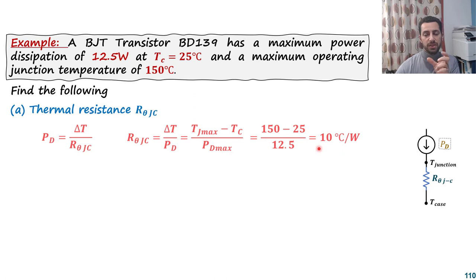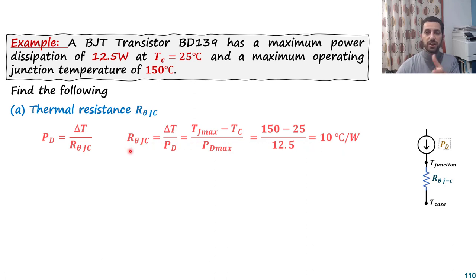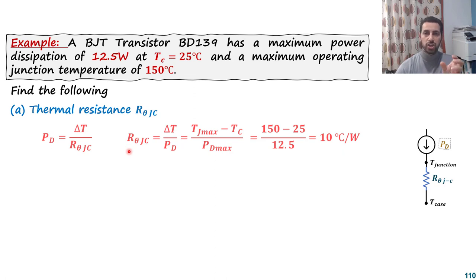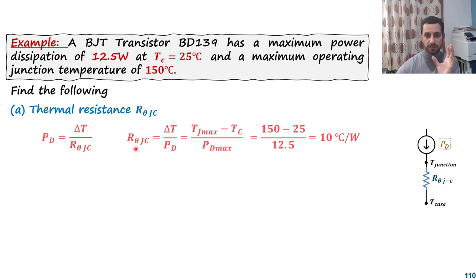This value of 10°C/W is fixed for this transistor, because it does not change with thermal or electrical operating conditions — it only changes if you change the geometry of the transistor. Since the geometry is fixed, that value is also fixed.